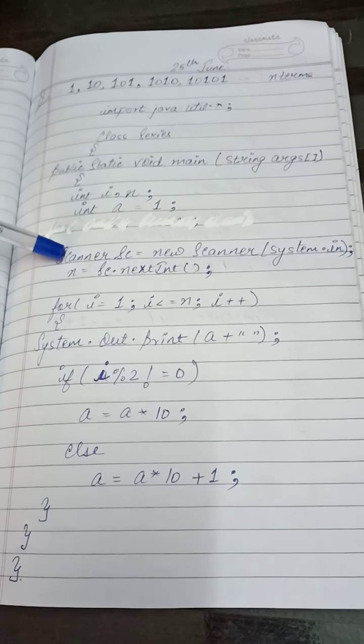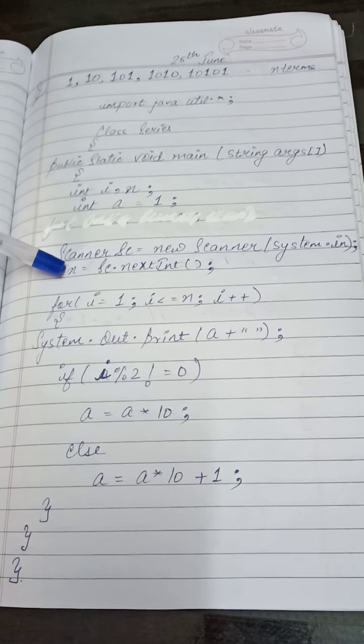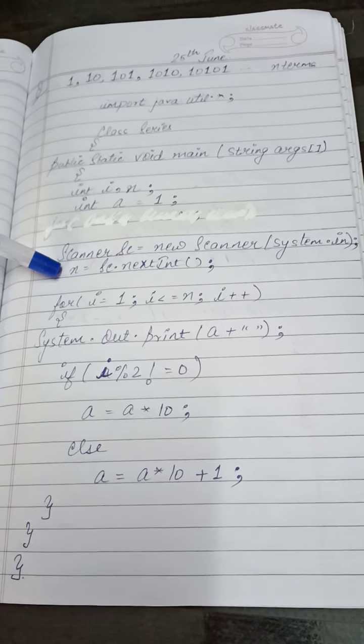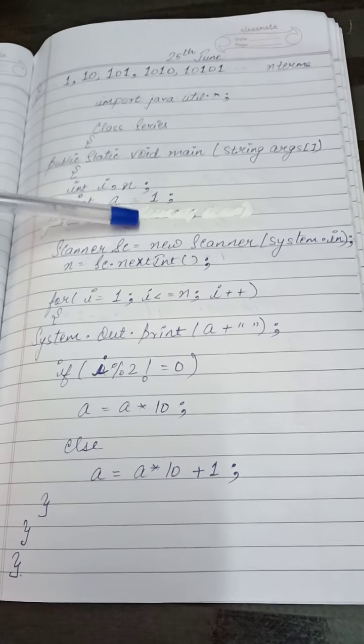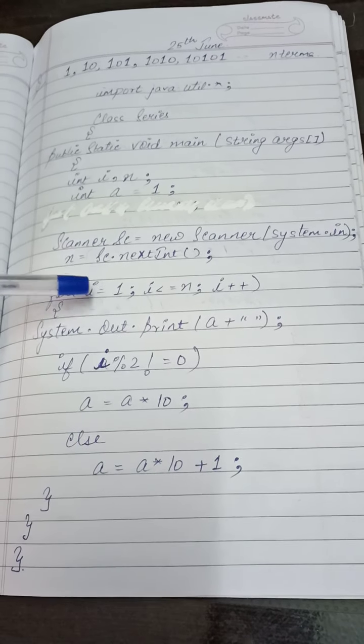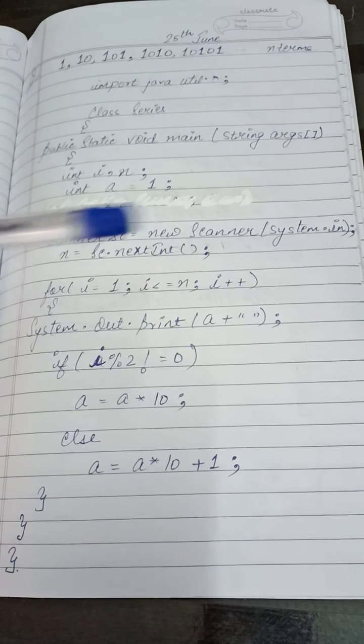Scanner class I have taken for taking user input, how many terms we want to enter. For that I have taken n variable, n is equal to sc.nextint. Now loop will work. I have taken for loop. For i is equal to 1, i less than is equal to n and i++.